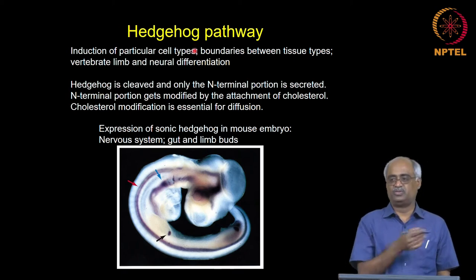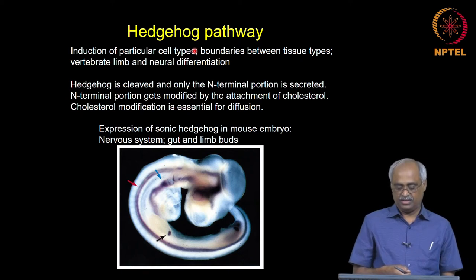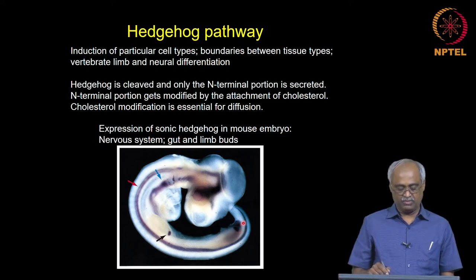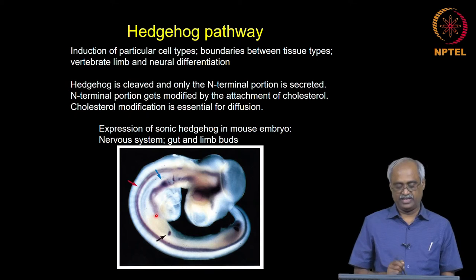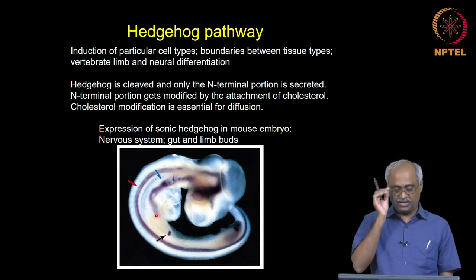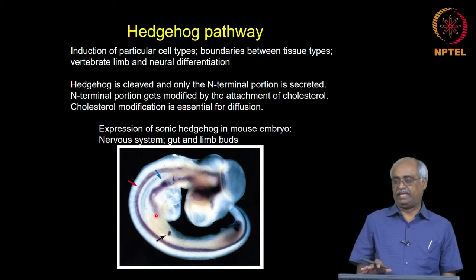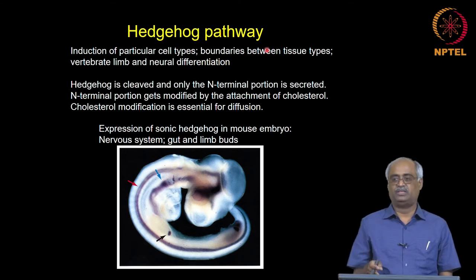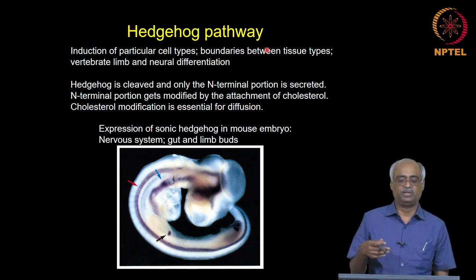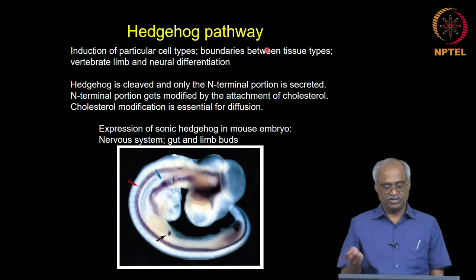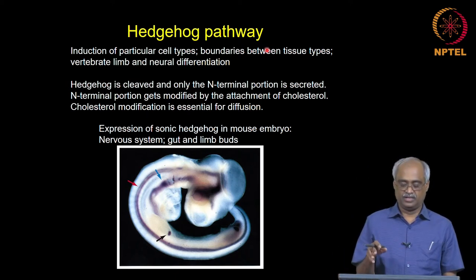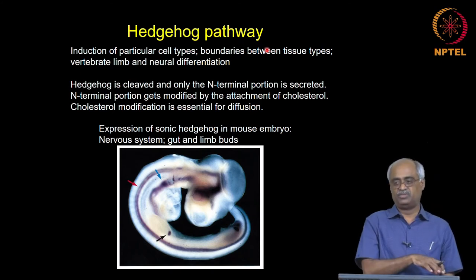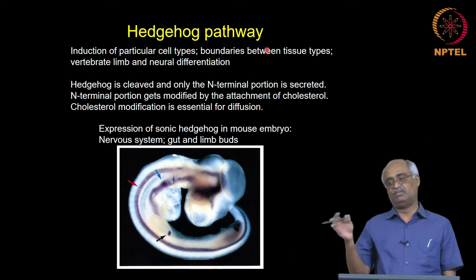The word hedgehog is based on the Drosophila phenotype where it was originally found; in mouse the ortholog is called sonic hedgehog. This whole-mount embryo in-situ shows expression in three tissues marked by three arrows: the nervous system, the limbs, and the gut region. These are usually important for tissue boundary-making; boundaries are defined primarily using this signaling. It is required for limb development, neural differentiation, and somite differentiation to make cartilage.